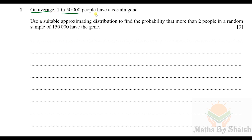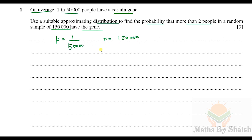Question 1: On average, one in 50,000 people have a certain gene. Use a suitable approximating distribution to find the probability that more than two people in a random sample of 150,000 have the gene. We are talking about an average, so we use Poisson. The proportion p is 1/50,000 and the sample size n is 150,000. So λ = np = 150,000 × (1/50,000) = 3.